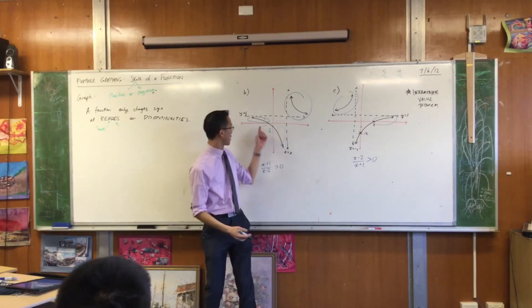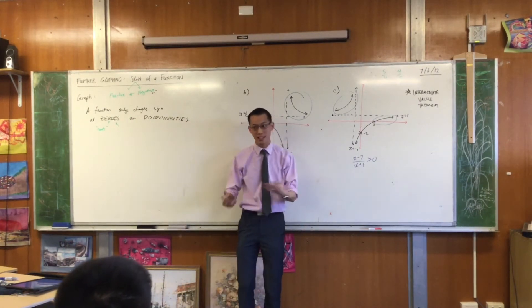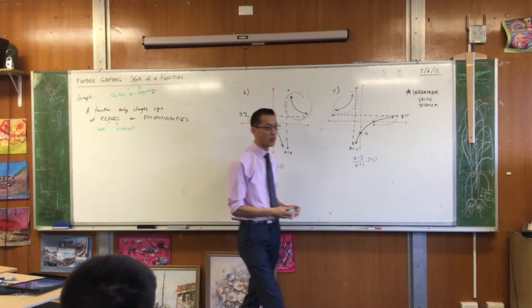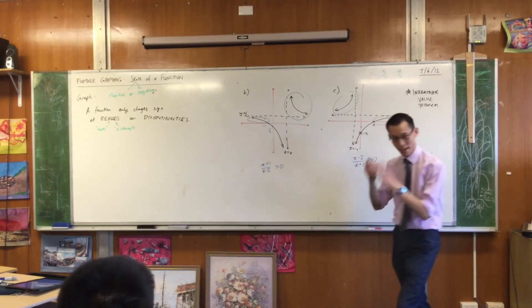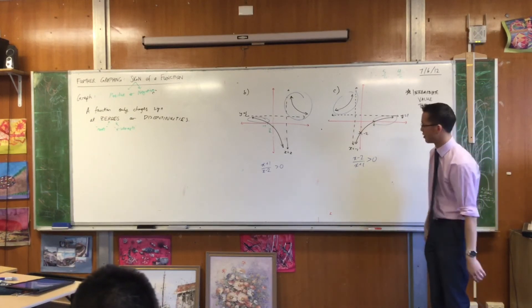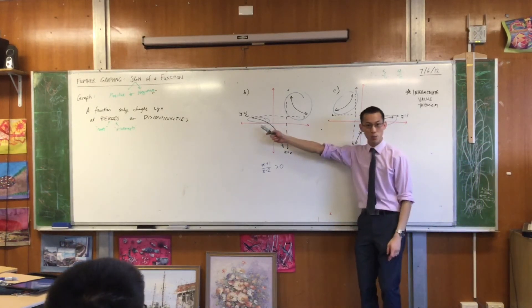We also, when we had a look at these guys, we called them x-intercepts, didn't we? But more generally speaking, in function notation, we call them zeros. So, you need to get used to hearing that word, and being asked, can you find the zeros of a function? That's where does this thing collide with the x-axis.